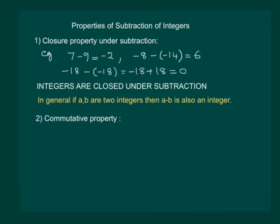Next is the commutative property. Let us check the commutative property for subtraction of integers. Consider 5 minus 3, we know 5 minus 3 is 2. What about 3 minus 5? We know the answer is minus 2. Since we have found out an example for which 5 minus 3 is not equal to 3 minus 5...